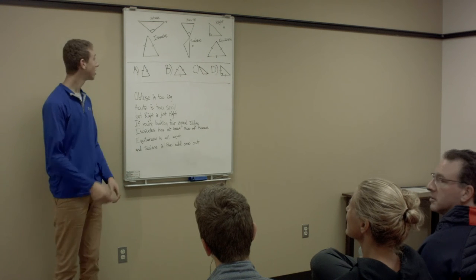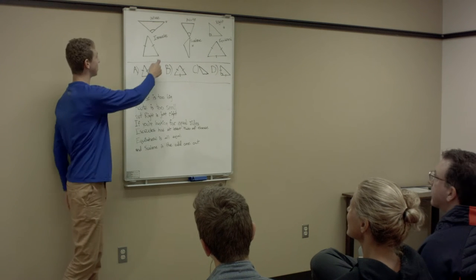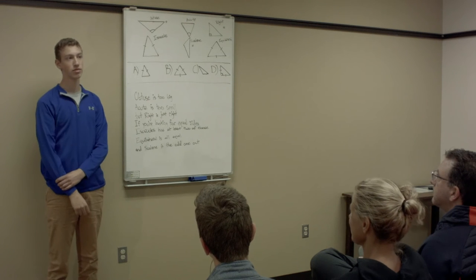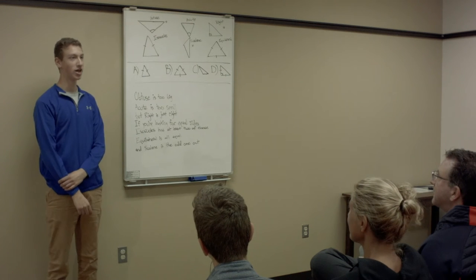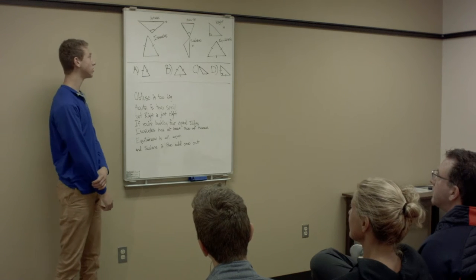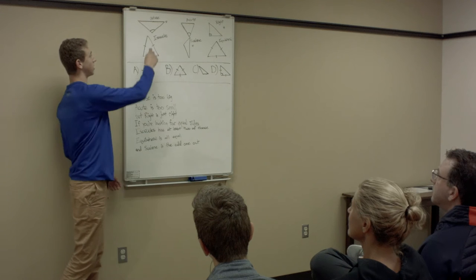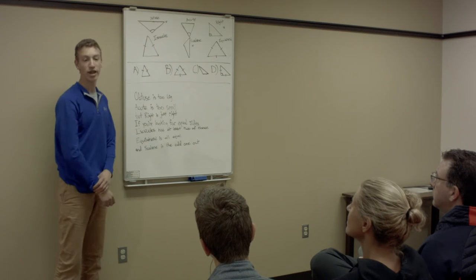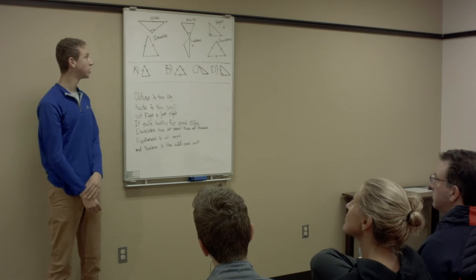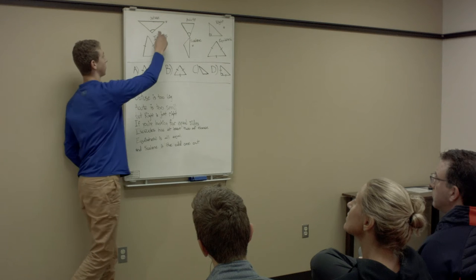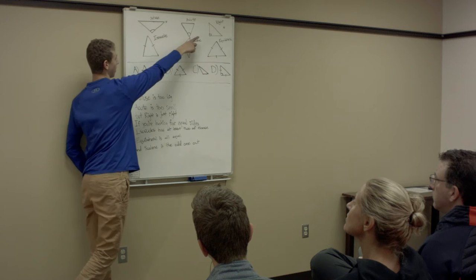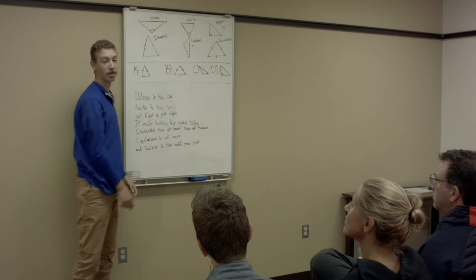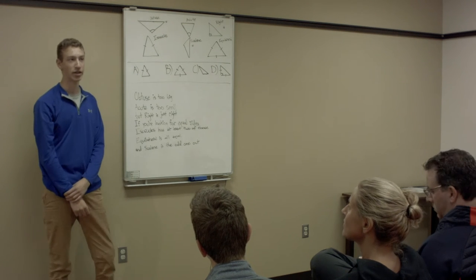Jack, can you tell me what type of shape this is? It looks like a triangle. Great job. So these are triangles and as you can see there are six different ones — six different types of triangles. These first three can be identified by their angles and these last three can be identified by their side lengths.